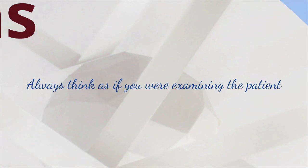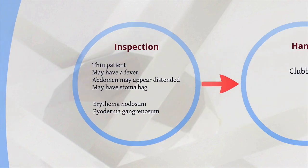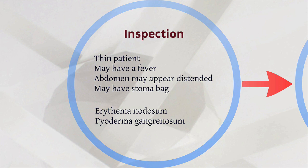Moving on to signs, always think as if you were actually examining the patient and group them accordingly. Starting with inspection: the patient may be very thin, reflecting weight loss. They may have a fever if their ulcerative colitis is flaring. The abdomen may appear distended, and they may have signs of a previous operation, such as a stoma bag in situ. Also look for erythema nodosum, most likely seen on the shins, and pyoderma gangrenosum.